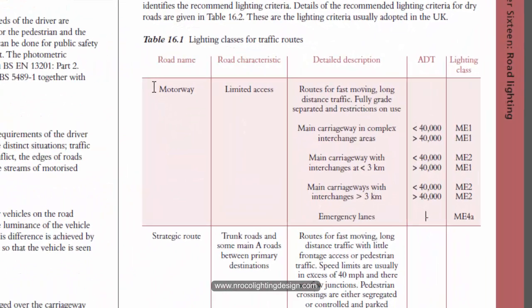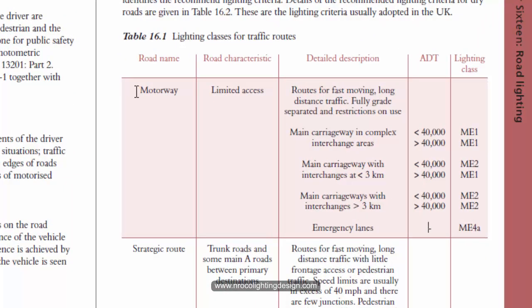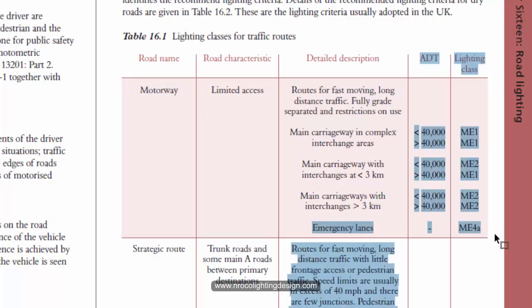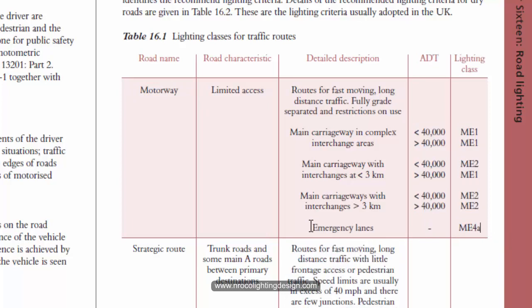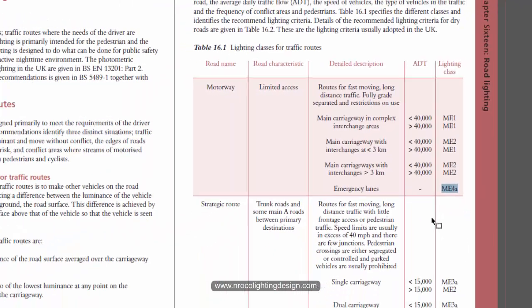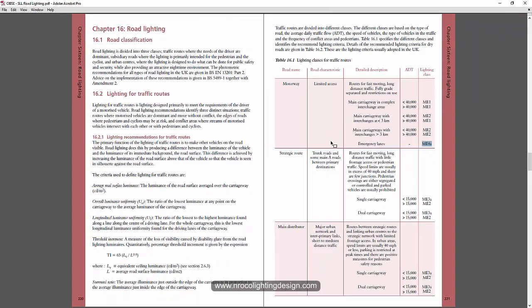This is under the motorway emergency lanes. You can see here it's the emergency lane, and this is the value of the ME4. If you go to my Udemy course, you will understand more about this type of road — the motorway, the strategic route.